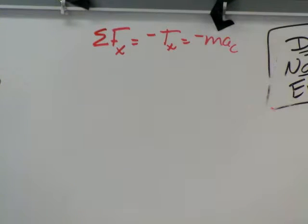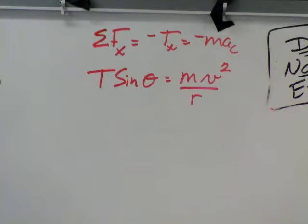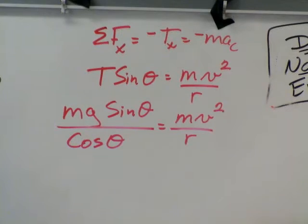Going in the X direction, both of these are indicated as negative because of our diagram. We can make them negative on both sides. Substitute T sine theta in for TX.